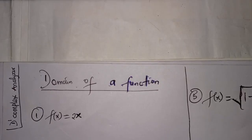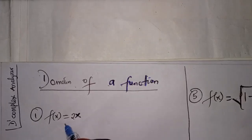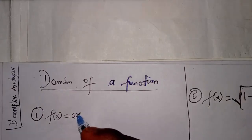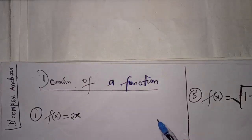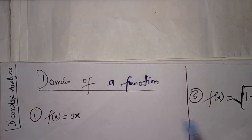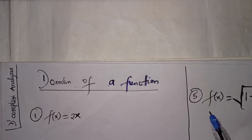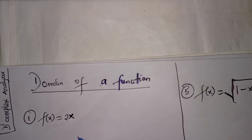Look at the first example. f of x equal to 2x. The domain of this function is the set of all values of x that will make this function to be defined. Now, this function does not have a square root, does not have a fraction, and does not involve any logarithmic function. So there are no restrictions on the domain. It is just plain f of x equal to 2x. Under the set of real numbers, whatever value I place in for x, the result will be defined.